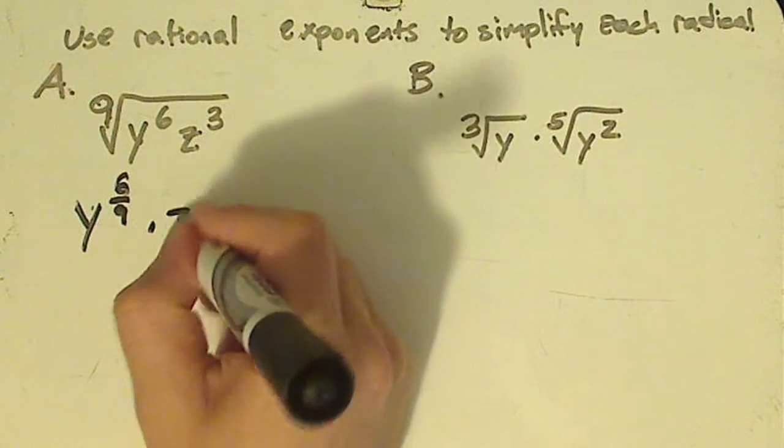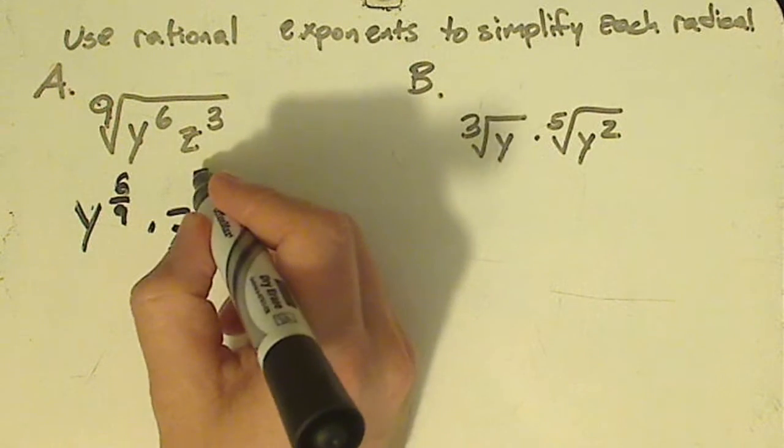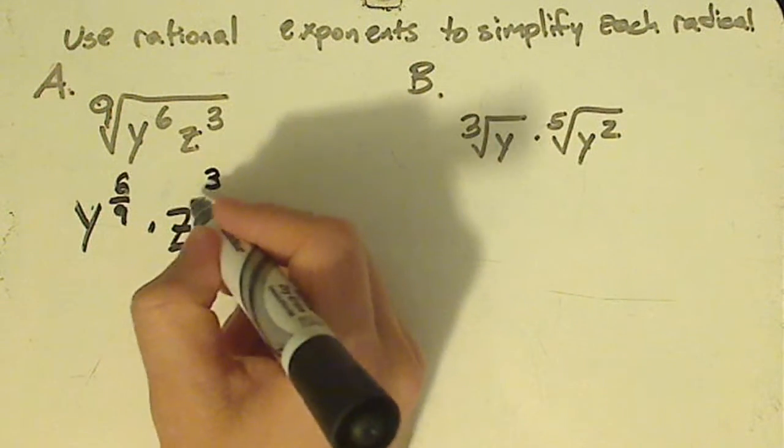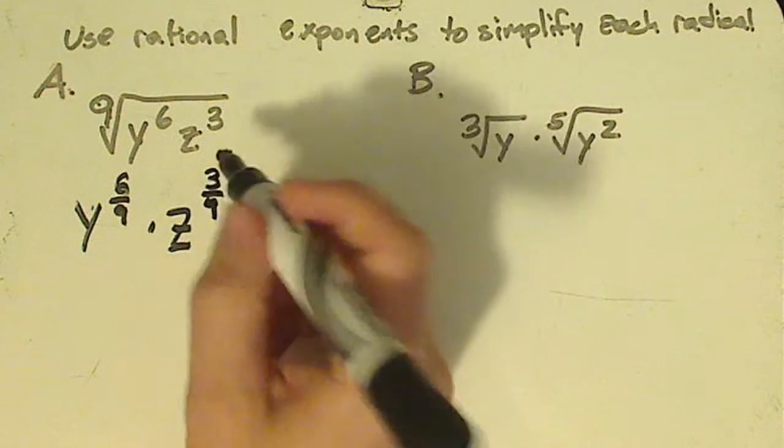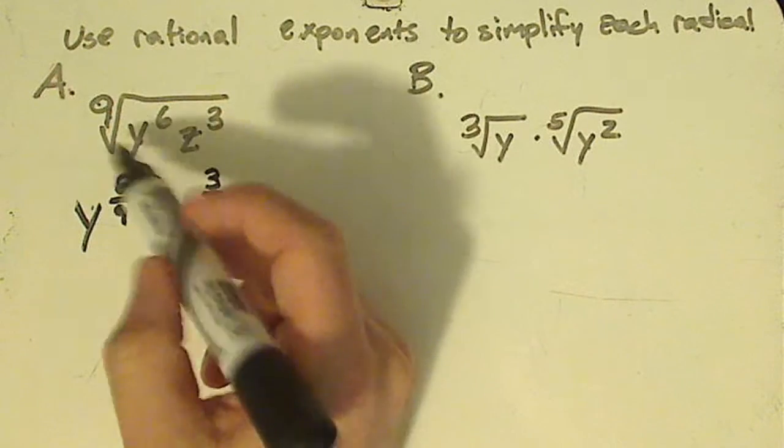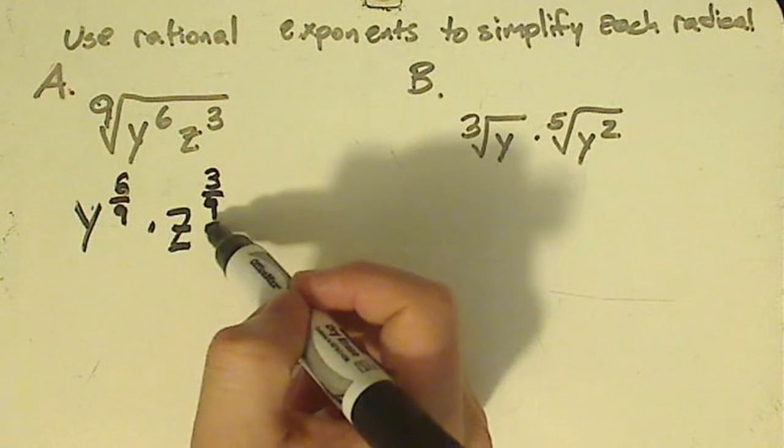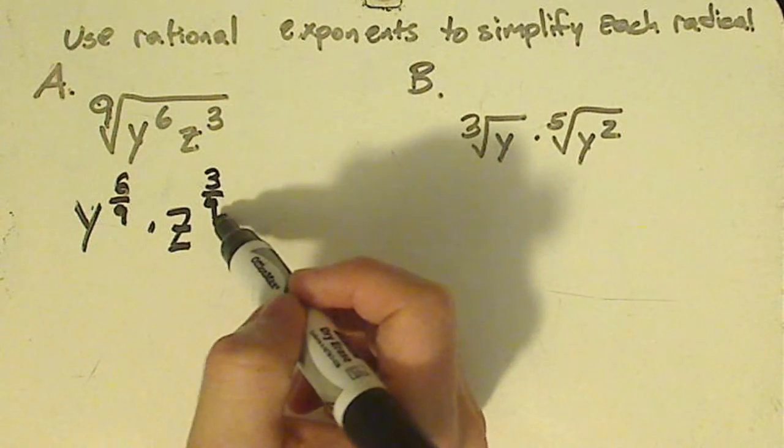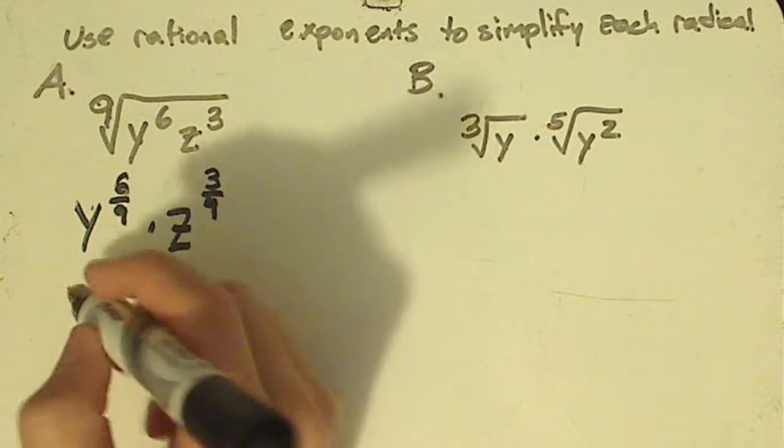And then the denominator is the root. So it would be y raised to six over nine. Do the same thing with the z. So it would be z raised to the three ninths. Again, whatever it's being raised to goes in the top. Whatever the root is, that's what's going to go into the denominator.